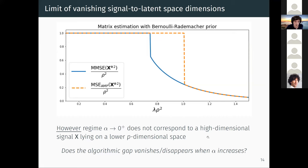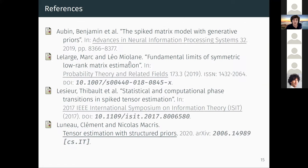As future work, I would like to look at what happens when alpha increases — specifically, does the algorithmic gap vanish or completely disappear as alpha increases? I will finish with a few references, especially the work by Aubin and collaborators on the spiked matrix model with generative priors, which also has many algorithmic considerations including a linearization of AMP to estimate the spike. I would also like to point to our preprint, tensor estimation with structured priors, if you are interested in the proofs of the asymptotic mutual information and asymptotic minimum mean squared error. Thank you.